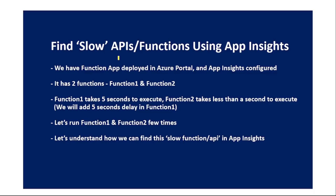In this video, let's find slow performing APIs or functions using App Insights. We have a function app deployed in Azure portal with App Insights configured. It has two functions: function one takes five seconds to execute, and function two takes less than a second. We will add a five-second delay in function one, then run both functions a few times.